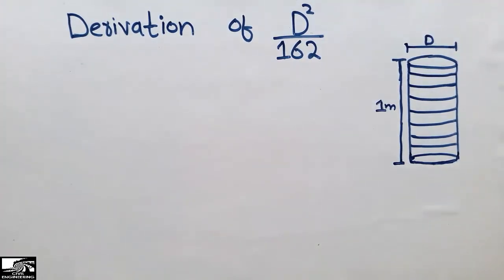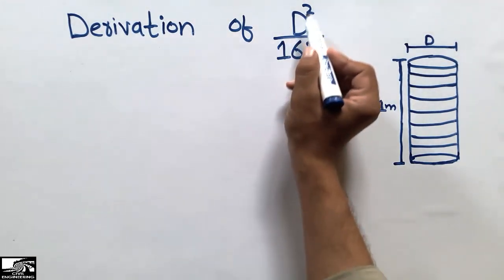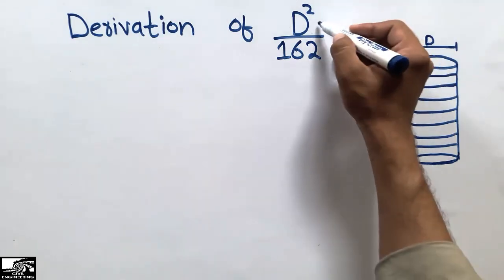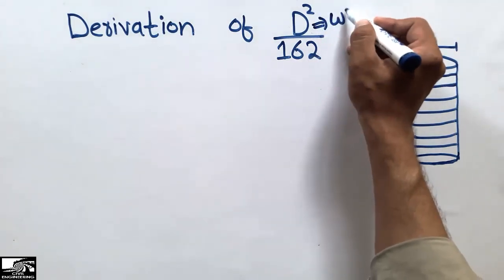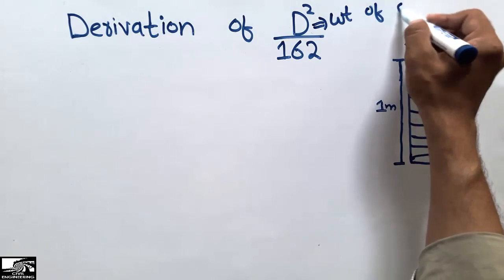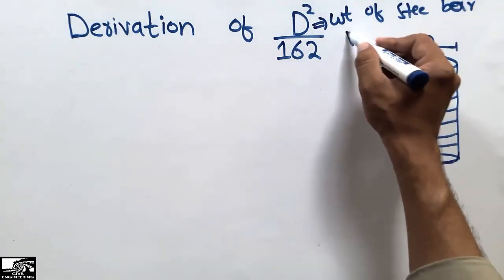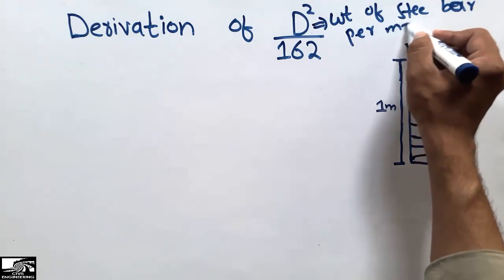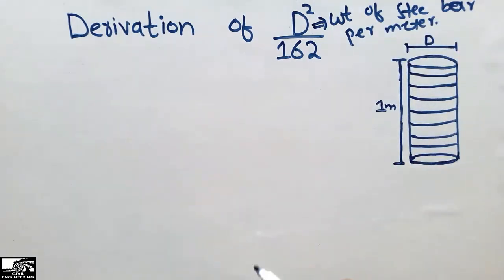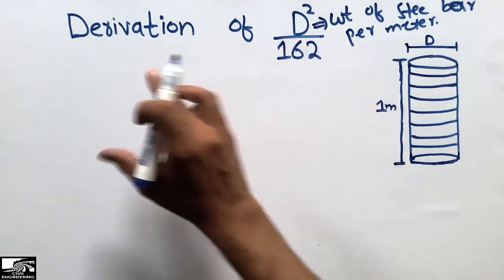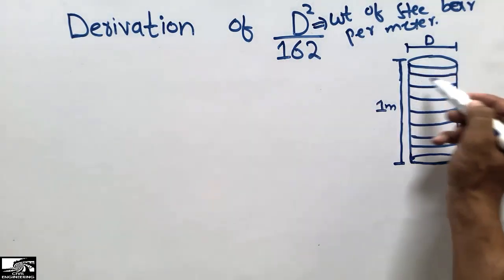Hello guys, welcome back to the C1 Engineering YouTube channel. Please subscribe for daily C1 Engineering videos. Today we are going to derive the formula D²/162, which is used to find the weight of the steel bar per meter. In this lecture we are going to derive this formula step by step.